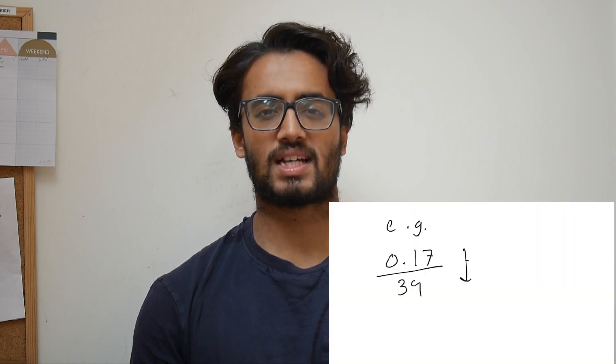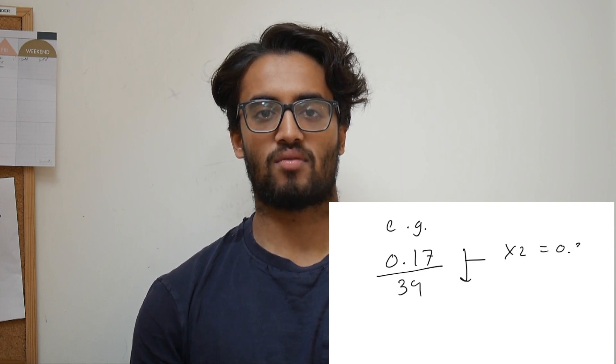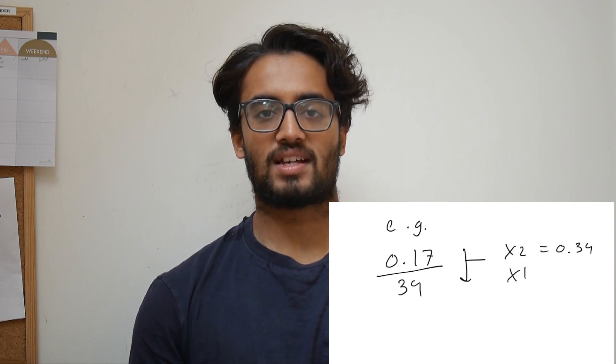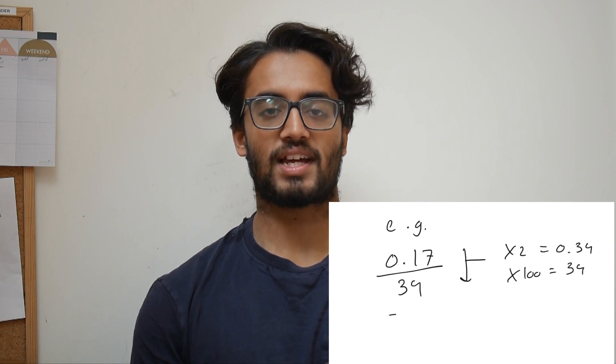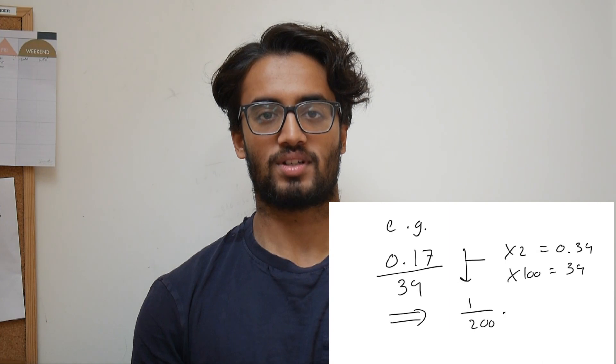So let's say for example you have the fraction 0.17 over 34. What you should notice is that 17 is half of 34 and that if you multiply 0.17 by 200 you're going to get 34. So therefore this fraction is going to go to 1 over 200. Working in fractions can make these things way easier to spot and can really help speed up your calculations. Definitely use fractions as much as possible because this can save precious seconds in BMAT Section 2 Maths.